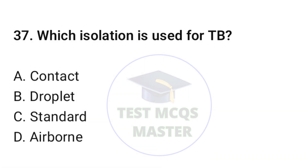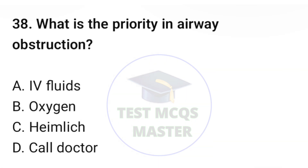Question number thirty-seven: Which isolation is used for TB? The correct option is D: airborne. Question number thirty-eight: What is the priority in airway obstruction? The correct option is C: Heimlich maneuver.